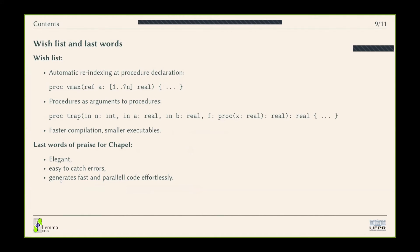I have a wish list. One wish is that Chapel had something like Fortran's ability to re-index an array in a procedure argument, so that inside the procedure an array is automatically indexed from one to N and I immediately know its size. I also wish I could declare a procedure as an argument to another procedure — useful for things like the trapezoid rule in numerical integration. And a little faster compilation would be nice, though I know people are working on it.